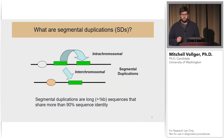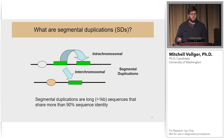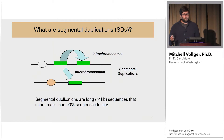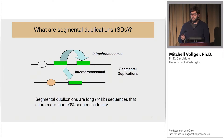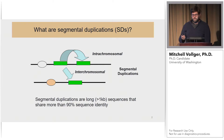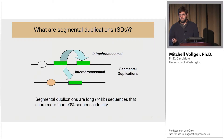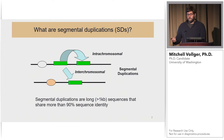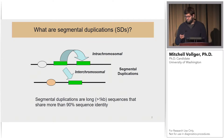First, I'm going to tell you a little bit about what segmental duplications are. Segmental duplications are large stretches of sequence that exist more than once in a genome. More specifically for humans, they're defined as sequences that are over a kilobase pair in length and share more than 90 percent sequence identity to another region in the genome.